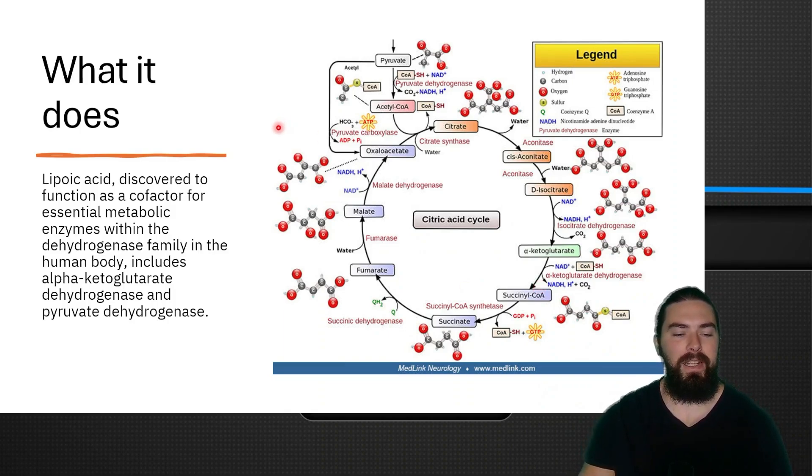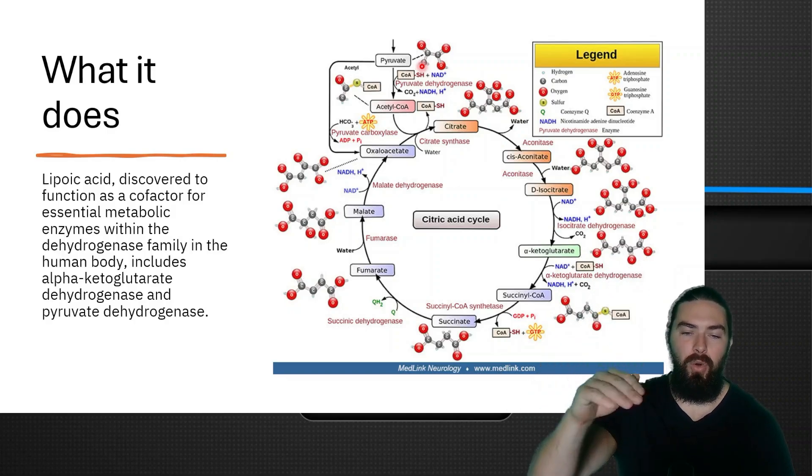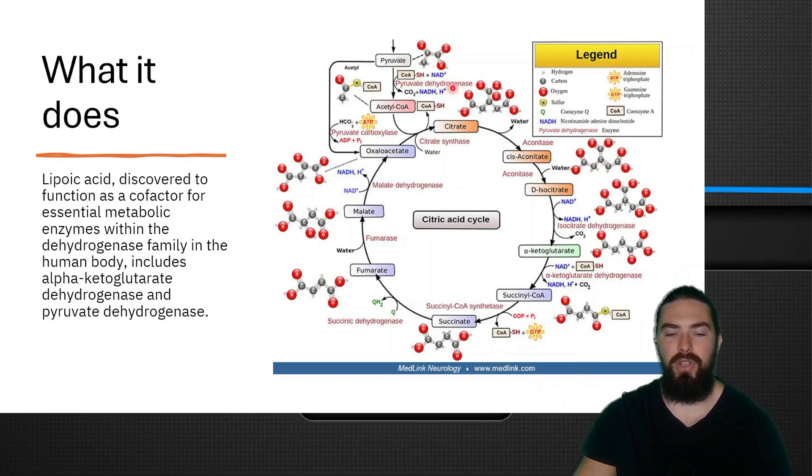What it does: lipoic acid was discovered to function as a cofactor for metabolic enzymes within the dehydrogenase family, including alpha-ketoglutarate dehydrogenase and pyruvate dehydrogenase. Pyruvate dehydrogenase is up here—when you break down glucose in the body, you break it all the way down into pyruvate, and then pyruvate dehydrogenase is a rate-limited enzyme to convert it into acetyl-CoA to be used in the Krebs cycle to produce energy. The other one, alpha-ketoglutarate dehydrogenase, converts alpha-ketoglutarate into succinyl-CoA, so you need it for proper function of the electron transfer chain. This means alpha lipoic acid can be very good for increasing or at least normalizing energy production.